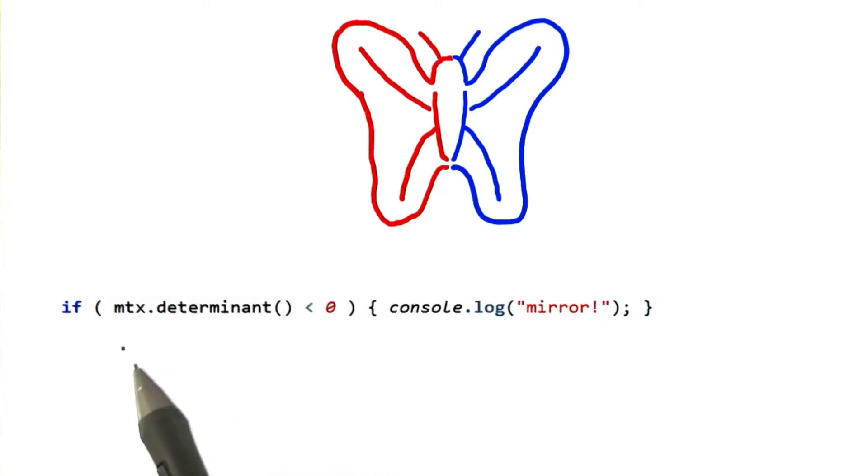Sometimes you might encounter a matrix in a data file and don't know where it came from. It might be a mirror, so that could really mess you up. You can use the matrix's determinant call to see if there's any mirroring in the matrix. If the determinant is negative, it contains a mirror.